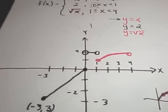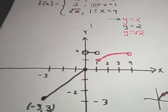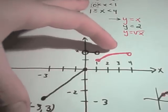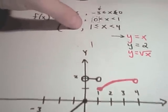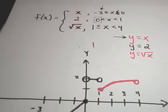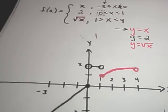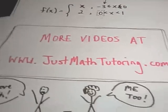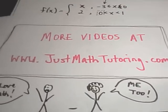Graphing piecewise defined functions is one of those things that often gives people some trouble. Definitely try these two examples on your own — graph the entire function piece by piece, remembering that you're only using the parts that correspond to certain x coordinates. I hope these examples help. If you have questions, feel free to check out my website — I've got tons of videos — or shoot me an email and I'll answer as soon as I can.